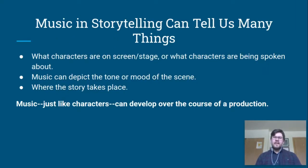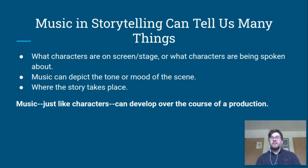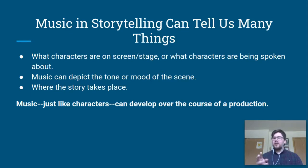Music and storytelling can tell us many things. Primarily, it tells us what characters are on screen or on stage, or what characters are being spoken about, whether they're in front of you or off stage or off camera. Music can depict the tone or mood of the scene, and music can tell you where the story takes place. Music, just like the characters in our stories, can develop over the course of a production. The music will carry the same general thematic ideas — the notes and rhythms will be pretty much the same — but over the course of a movie or a play or an opera, the music will change a little bit depending on what's happening.